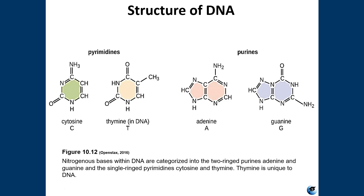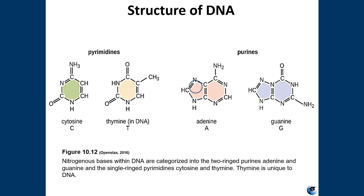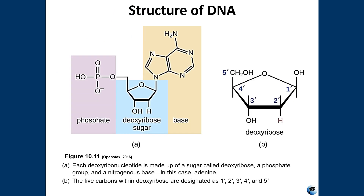The nitrogenous bases adenine and guanine are the purines, and they have a double ring structure. A way to remember this is that the larger structure has a smaller name, and the smaller structure has a larger name. So your purines are larger, with a double ring structure consisting of a 6-carbon ring fused to a 5-carbon ring. The pyrimidines, cytosine and thymine, are smaller than the purines and consist of just one 6-carbon ring structure.